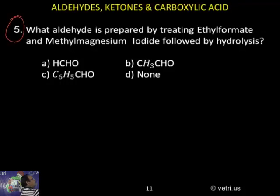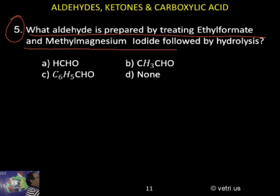Question number 5, what aldehyde is prepared by treating ethyl formate and methyl magnesium iodide followed by hydrolysis. This is again interesting, this is again coming under the Grignard reagent.